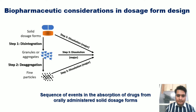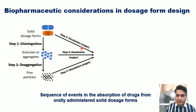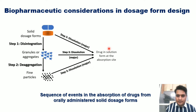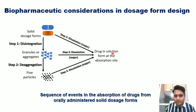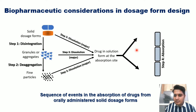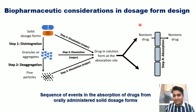The drug directly dissolves and becomes available for absorption. In all three cases — whether from the dosage form itself, from granules, or from fine particles — it is by dissolution that the drug becomes available for absorption. After dissolution, the drug will be in solution form at the absorption site and will be absorbed into the systemic circulation if it is in non-ionic form. The non-ionic form of the drug gets absorbed easily into the systemic circulation.